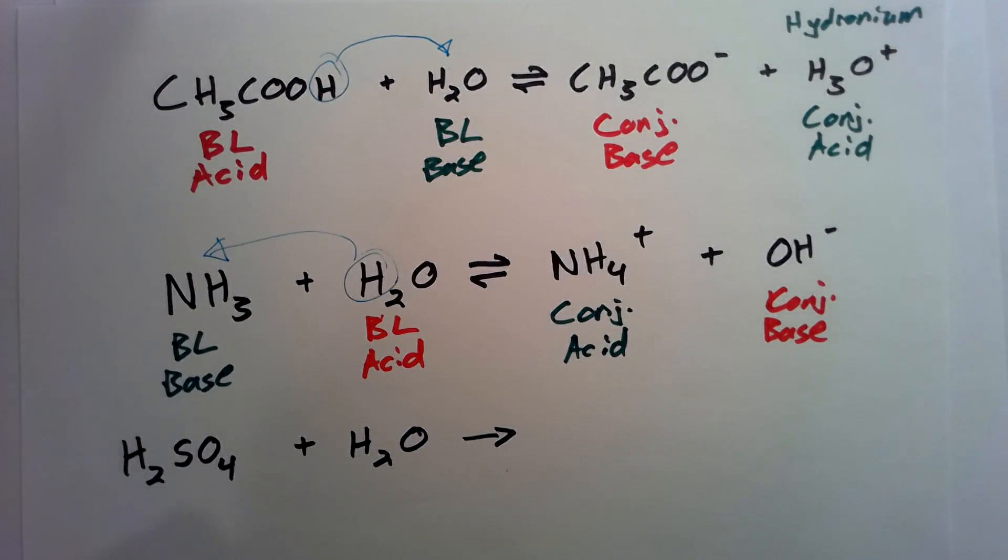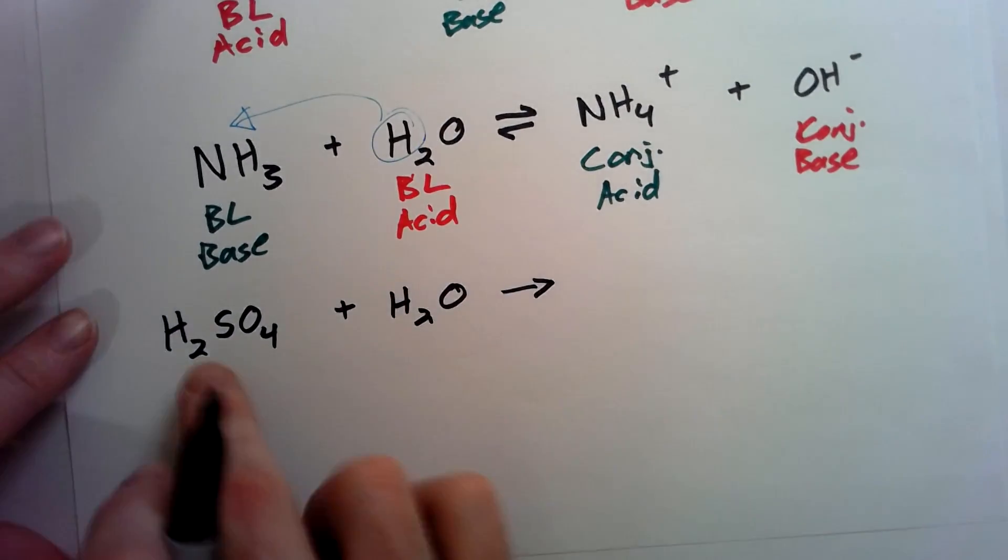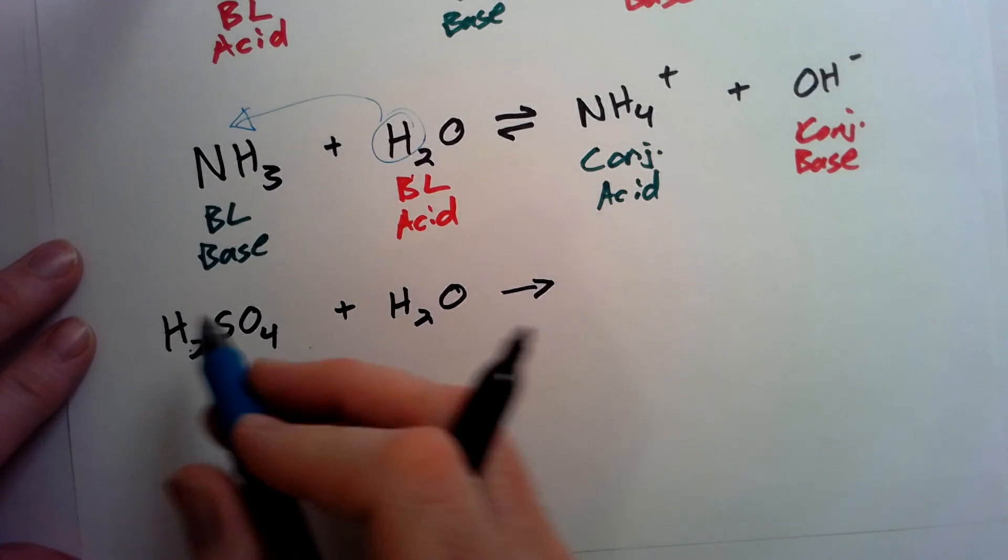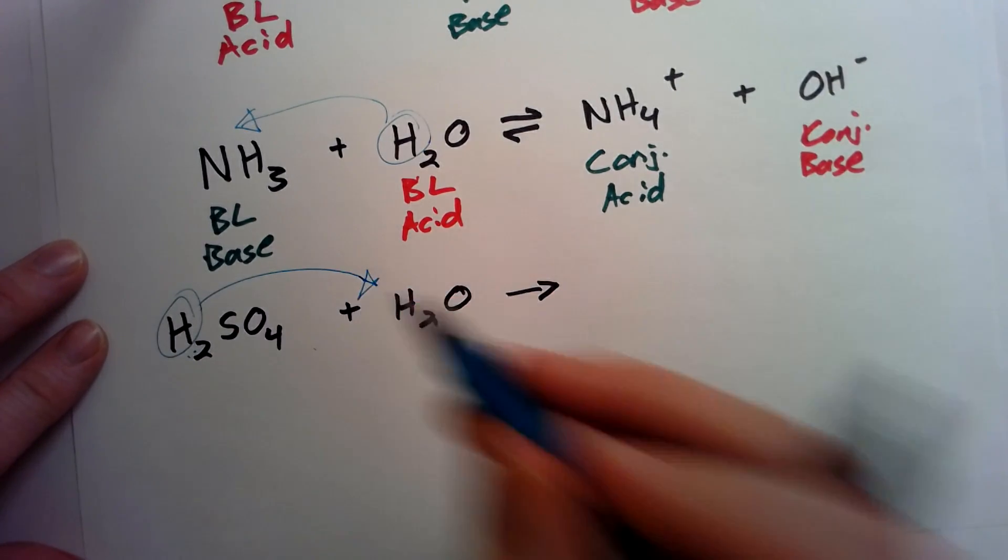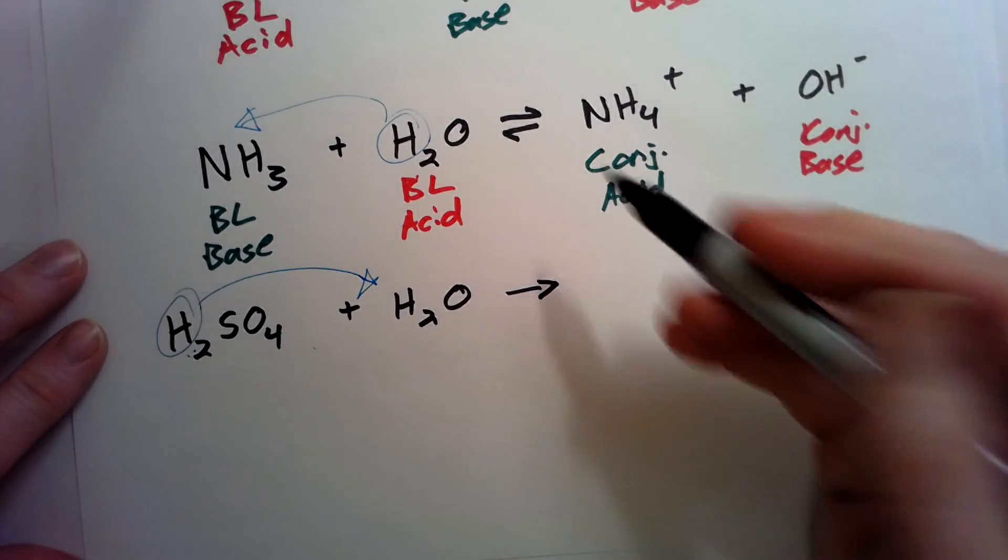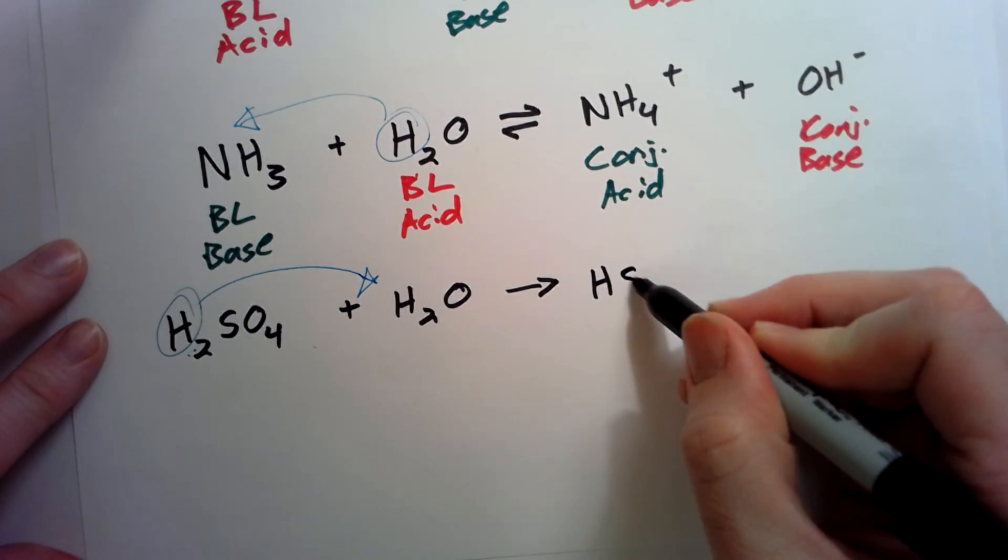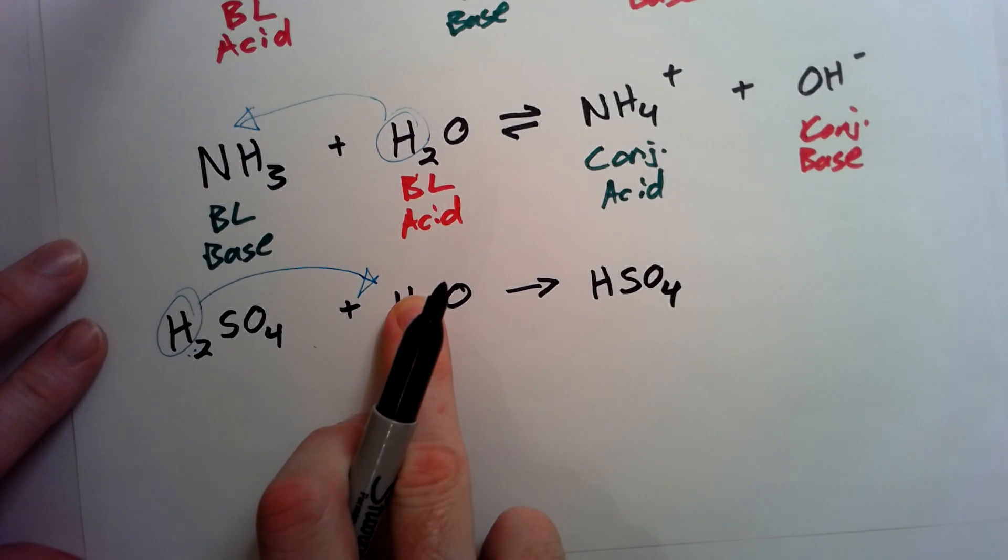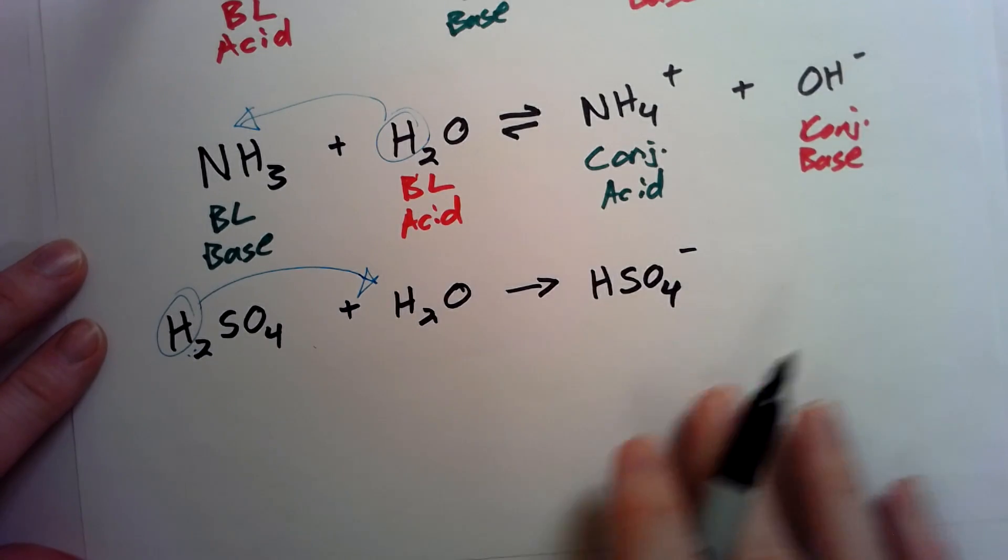If we have H2SO4 and water, this is going to be a strong acid right here. Let's say this is our acid. We know it's an acid because it starts with H, so we know it's going to give its proton away, and sulfuric acid is just an acid. So it just gives one proton. Let's only give one at a time. So it's HSO4, and since it lost a proton, it lost a positive charge, it should have a negative charge.